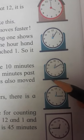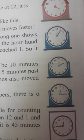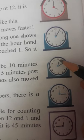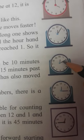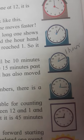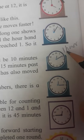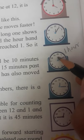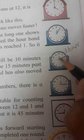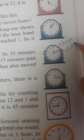The clock has 60 minutes. When the minute hand has passed the whole 60 minutes, it completes 1 hour. Then the hour hand will move slowly to the next number. So 1 hour is equal to 60 minutes.